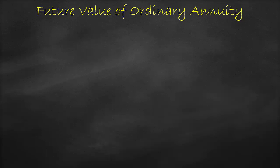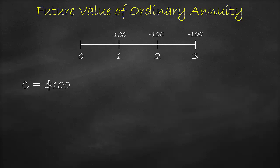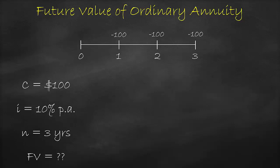Let's look at an example of the future value of an ordinary annuity. You will receive a cash flow of $100 per year for the next three years. The effective annual interest rate is 10%. Let's calculate the future value at the end of year three. Drawing a timeline: we have $100 in year one, $100 in year two, and $100 in year three. The variables are: cash flow of $100, interest rate of 10% per annum, number of periods of three years, and the future value is the unknown.